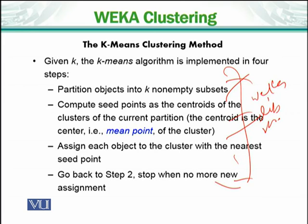Finally, the k-means clustering algorithm is an iterative algorithm. After the first steps are done, after completing the assigned steps, you go back to step two and repeat until no new centroid is produced.